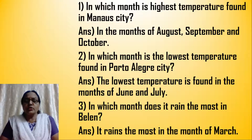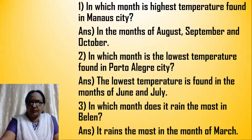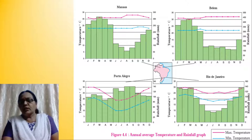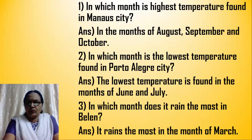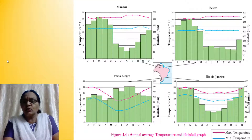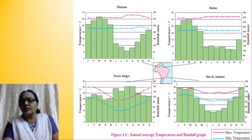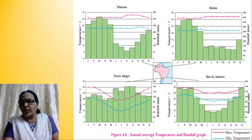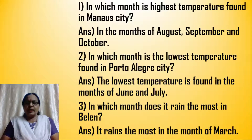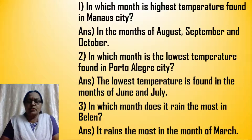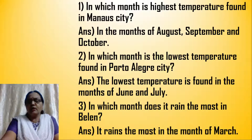In which month does it rain the most in Belém? The highest rainfall is received in the month of March. Rainfall goes on decreasing in the months of June, July, August, September, then again October. So in which month does it rain the most in Belém? The highest rainfall is received in the month of March.